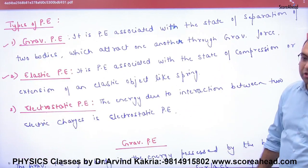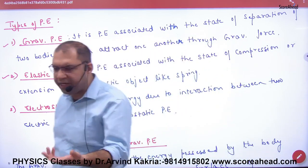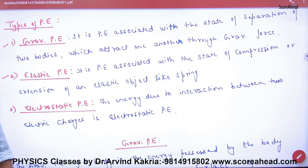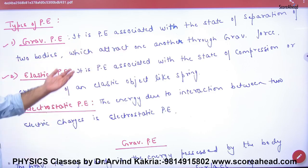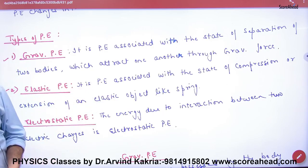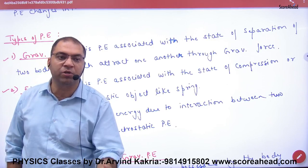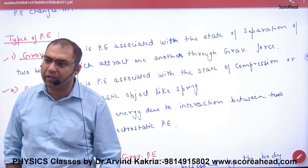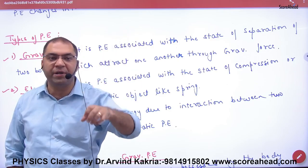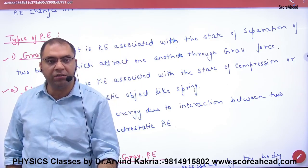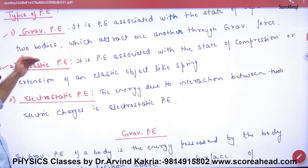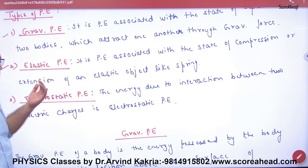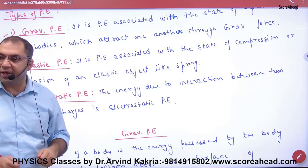Types of potential energy — in plus one and plus two we study: first, gravitational potential energy — it is the energy associated with the state of separation of two bodies which attract one another through gravitational force. You do work done to separate them, and the energy stored is called gravitational potential energy. Second, elastic potential energy — this is due to the compression or extension of an elastic object like a spring.